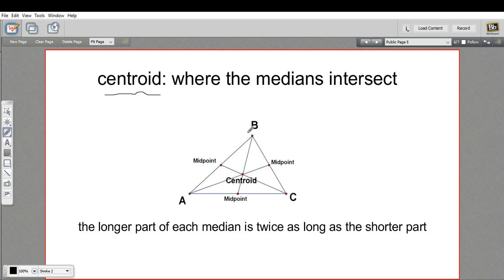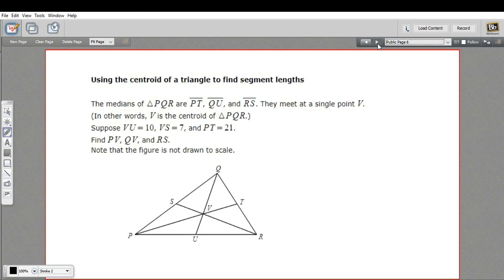The interesting quality about the centroid is that it cuts the median always into a part that's twice as long as the shorter part. Or the whole length here, one part is two-thirds of it and the other part is one-third of it. So let's see if we can use that information to solve a problem involving the centroid.